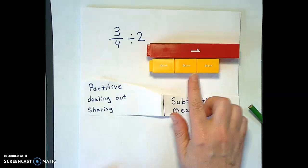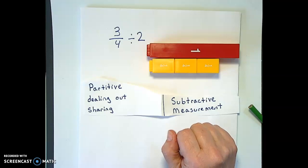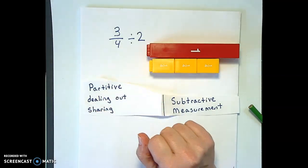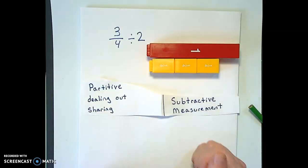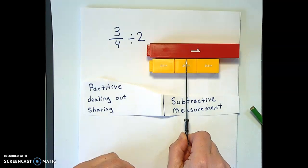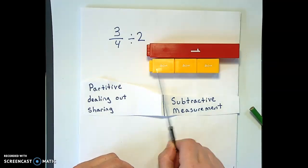We can't repeatedly take away 2 but we can definitely split 3 quarters of something between two people evenly. In order to split it evenly we don't want to cut our little fraction bars but that's what you would do to cut it evenly, right? There's about half of 3 quarters there.